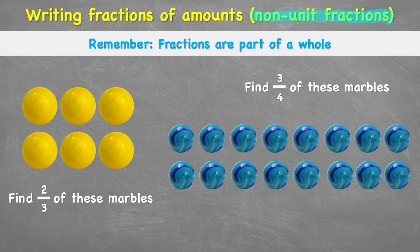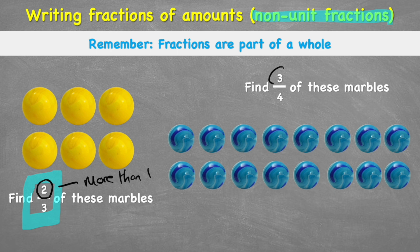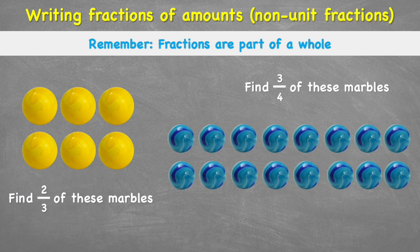Essentially, a non-unit fraction is a fraction where the number on the top is more than one. So in this case, two, and in this case, we have a three. And working out fractions of amounts with a non-unit fraction means we have one extra step.